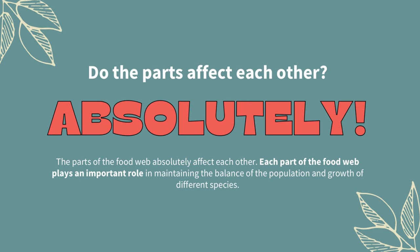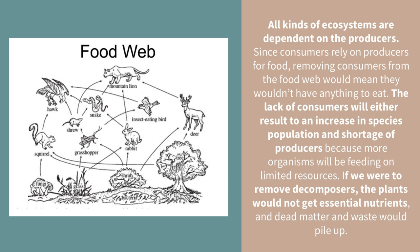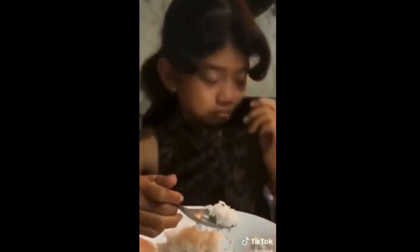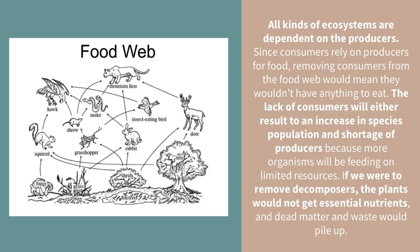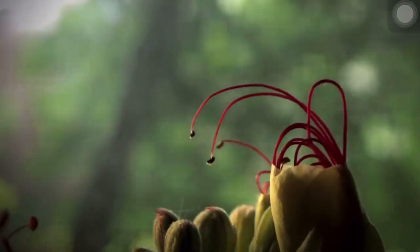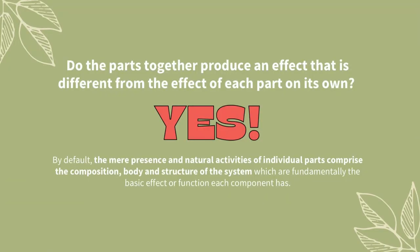Do the parts affect each other? Absolutely. Each part of the food web plays an important role in maintaining the balance of the population and growth of different species. All kinds of ecosystems are dependent on the producers. Since consumers rely on producers for food, removing consumers from the food web would mean they wouldn't have anything to eat. The lack of consumers will either result in an increase in species population and shortage of producers, because more organisms will be feeding on unlimited resources. If we were to remove decomposers, the plants would not get essential nutrients, and dead matter and waste would pile up.